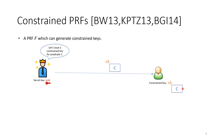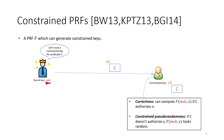This constrained key has two properties. The first property, which we call correctness, says that the user with this constrained key can evaluate the PRF on every input point authorized by predicate C. The second property is constraint randomness: on points not authorized by C, the value of the PRF looks random to the user, even when the user has access to the constrained key.